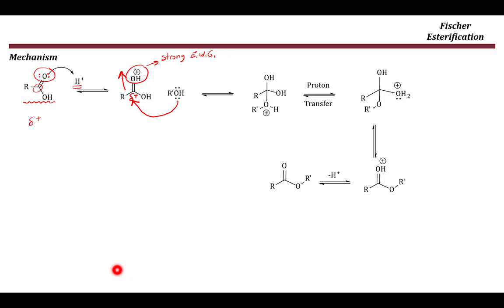The second step is the nucleophilic attack by the oxygen of the alcohol at the carbonyl carbon. This bond opens up and we end up with a tetrahedral intermediate — called tetrahedral because the carbon now has four bonds.